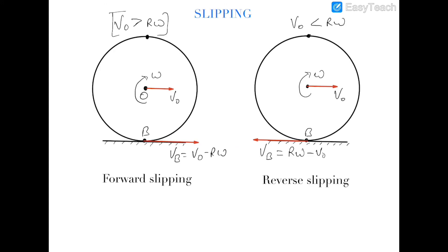In rolling, the point of contact is considered at rest — each contact point is changing but none of them is moving relative to the surface. In the case of slipping, the contact point is moving with respect to the surface. If the velocity of the contact point is in the forward direction — when v-naught is greater than r·omega — this is called forward slipping. If the velocity of the contact point is in the reverse direction — when r·omega is greater than v-naught — this is called reverse slipping or backward slipping.